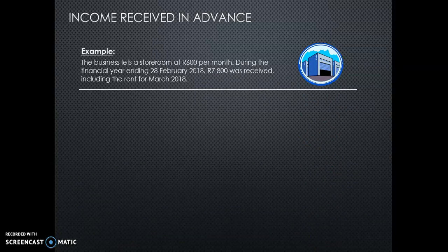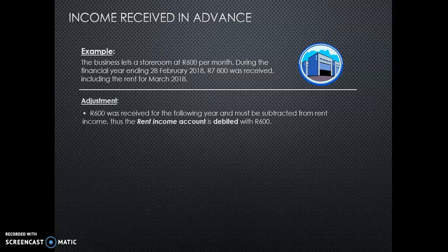Look at the example. You rent the store room. The rent was received — an amount of 7,800 — including the rent for March 2018. They give you 7,800 for 13 months. So you must calculate how much the rent was for one month. It is 600 — if you divide 7,800 by 13 you get 600. So 600 Rand was therefore received for the next financial year and must be subtracted from the current rent income.